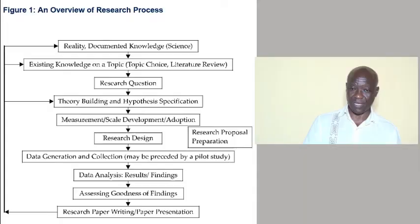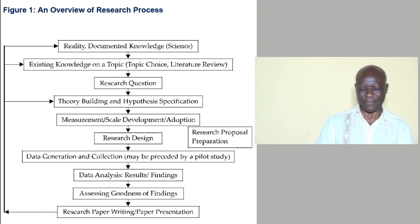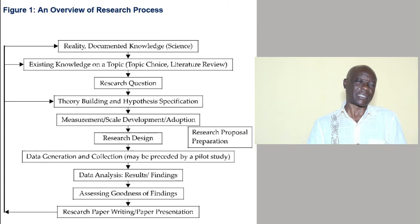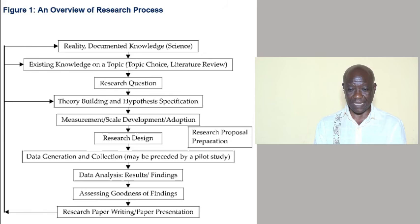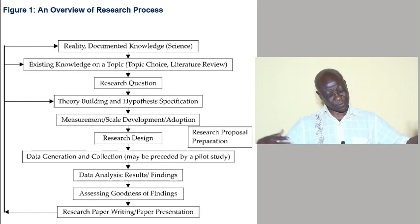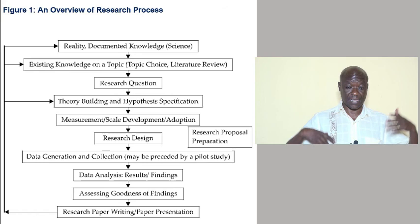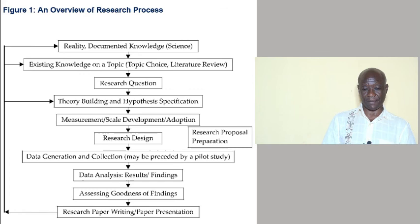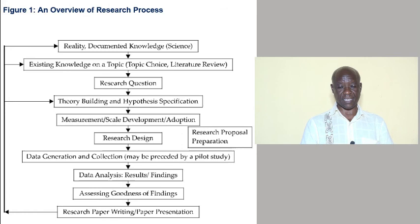From there I took you to the research process that must conform to the norms of scientific research. Figure 1 suggests a number of stages: reality to be documented, existing knowledge on a topic through literature review, research questions, theory building and hypothesis specification, measurements, research design, data generation, data analysis, assessing goodness of findings, and research paper writing.